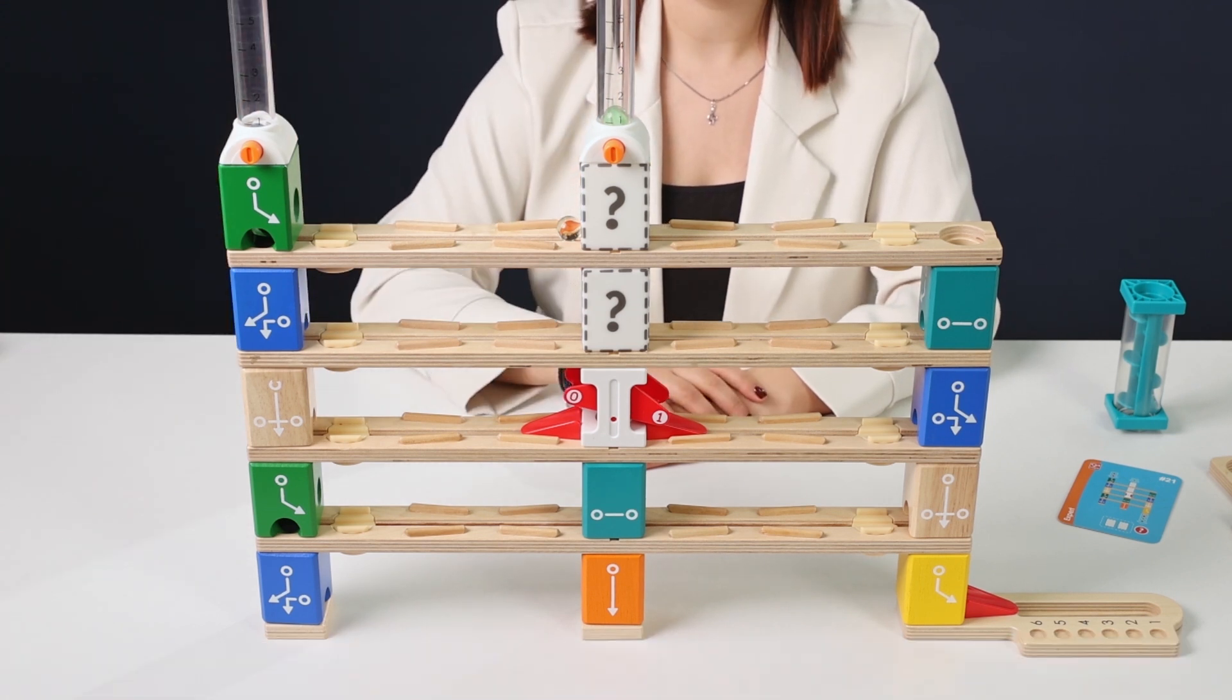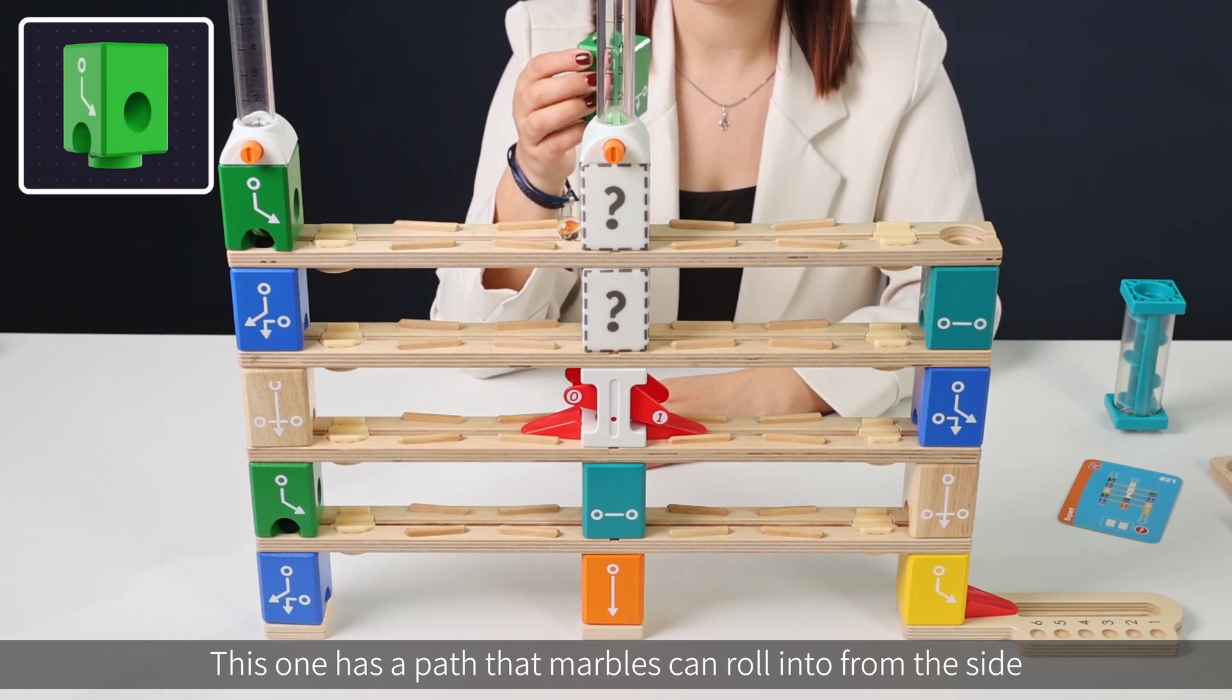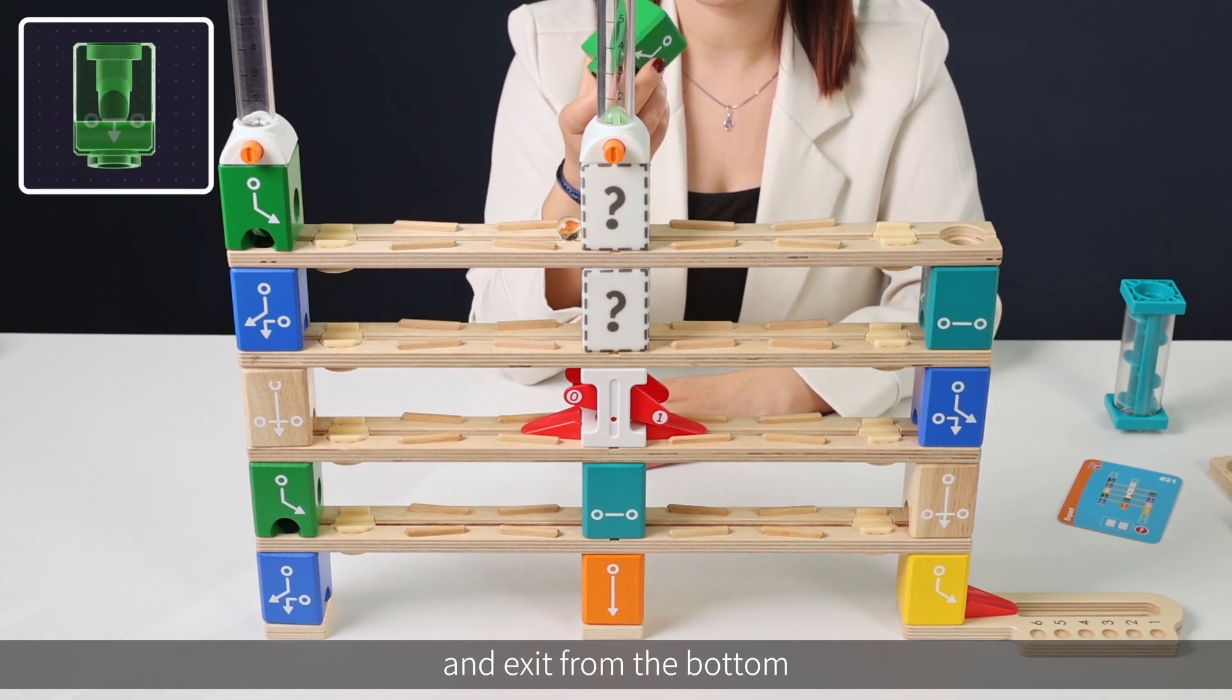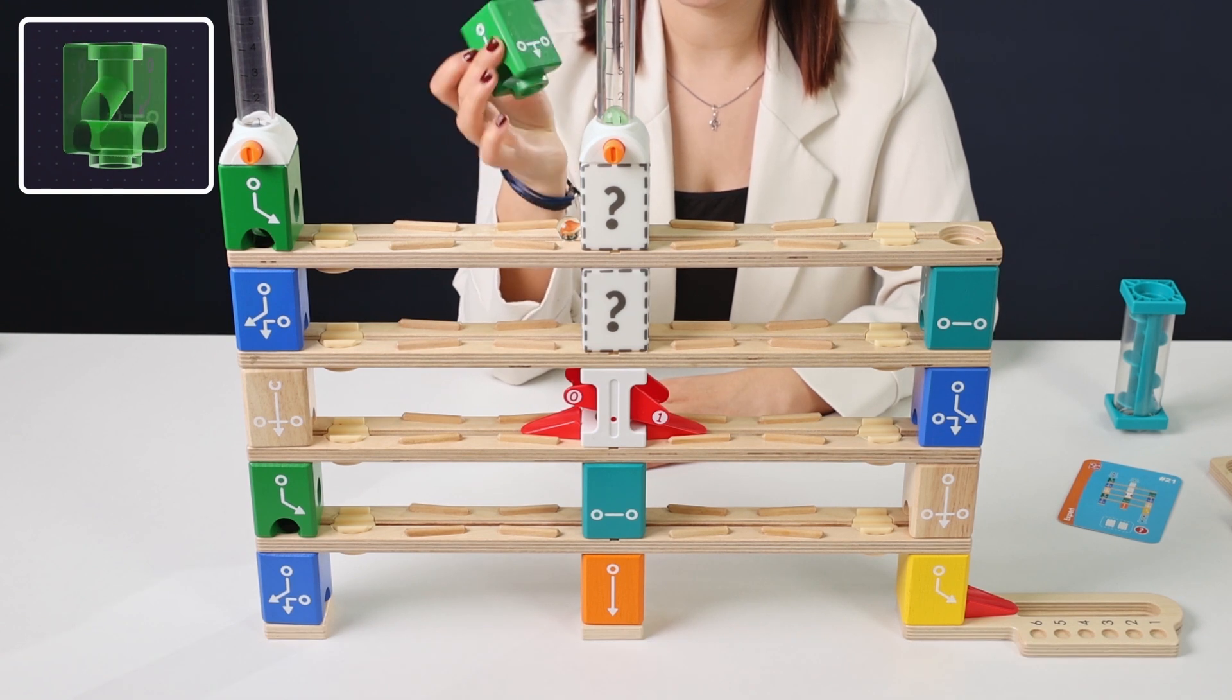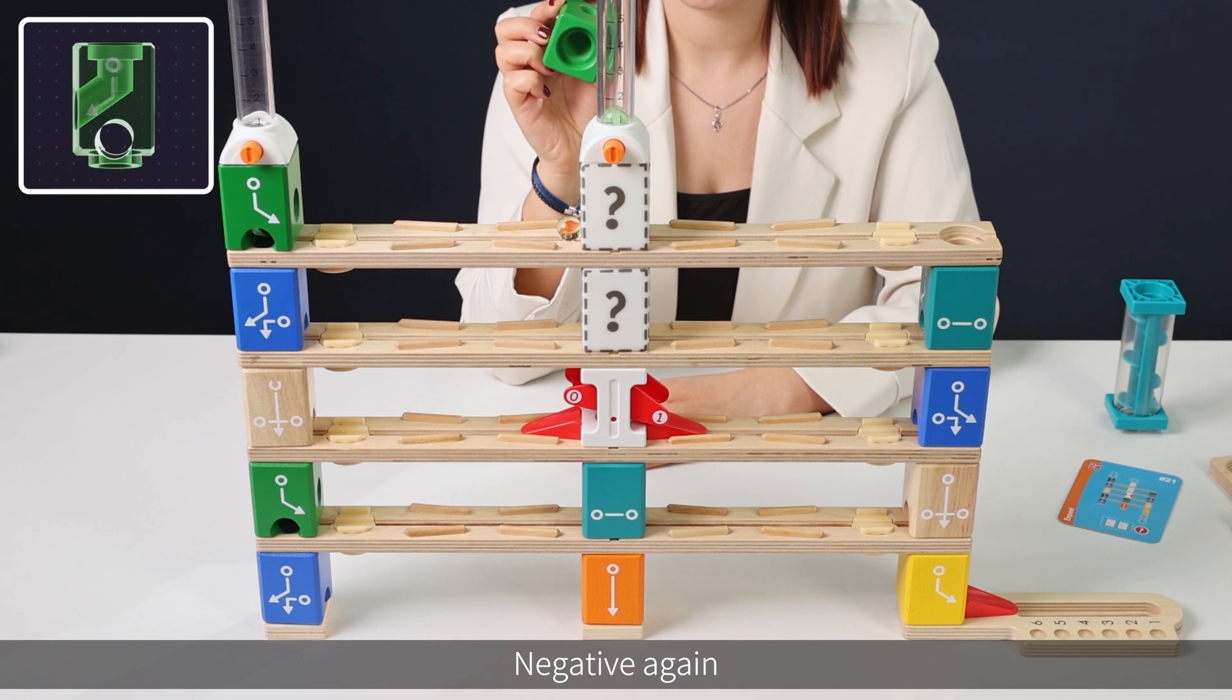How about the green block? This one has a path that marbles can roll into from the side and exit from the bottom. But there is no straight path at the top. Negative again.